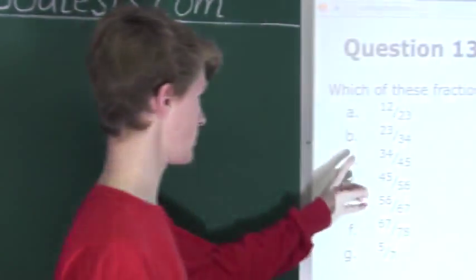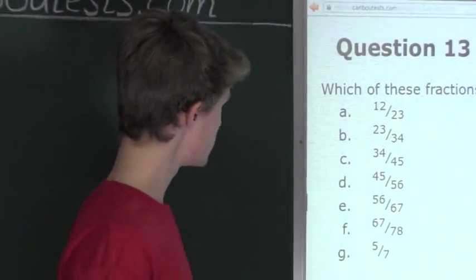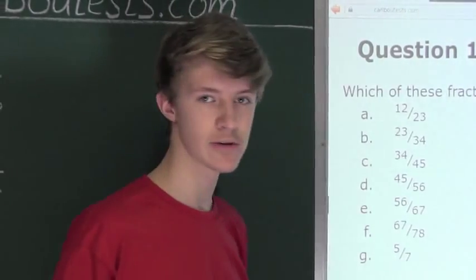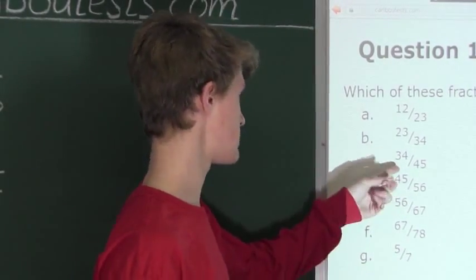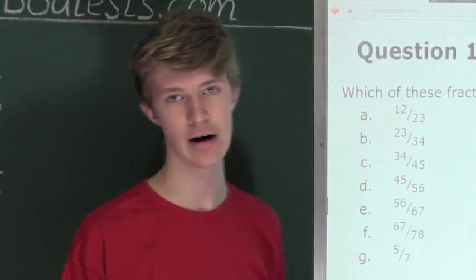Now let's look at the next one. For C, we want to find the difference again. The whole would be 45 over 45, minus 34 is 11 again in the numerator, and then 11 over 45.